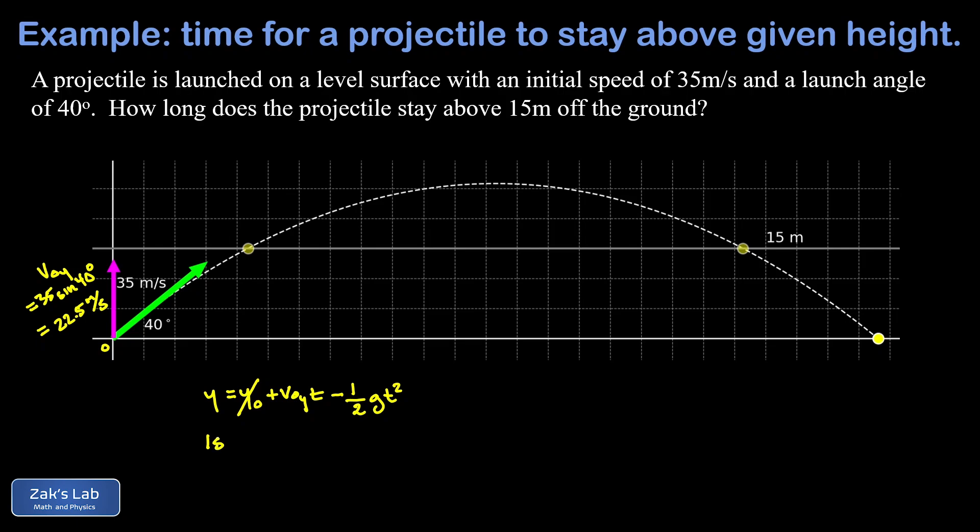So we put in a final y value of 15, our initial y velocity was 22.5 meters per second. So I have a 22.5 t there. And then we'll throw in an approximate value of g of 9.8. And half of that is 4.9. So I have minus 4.9 t squared.